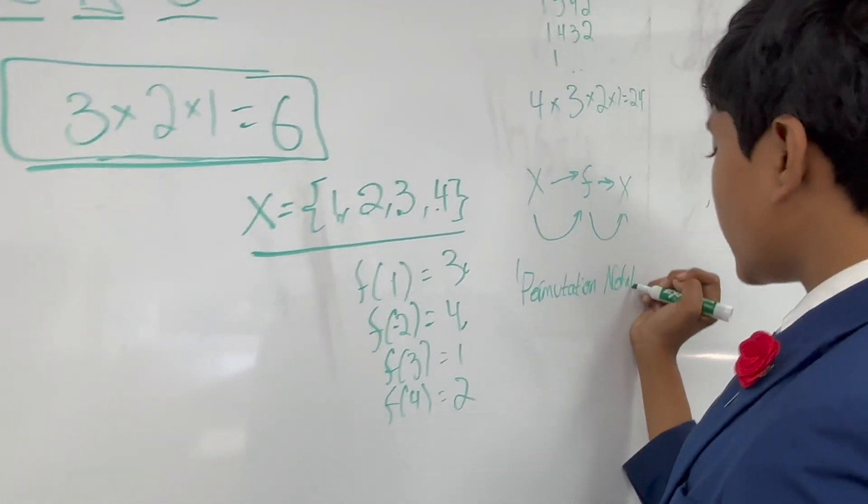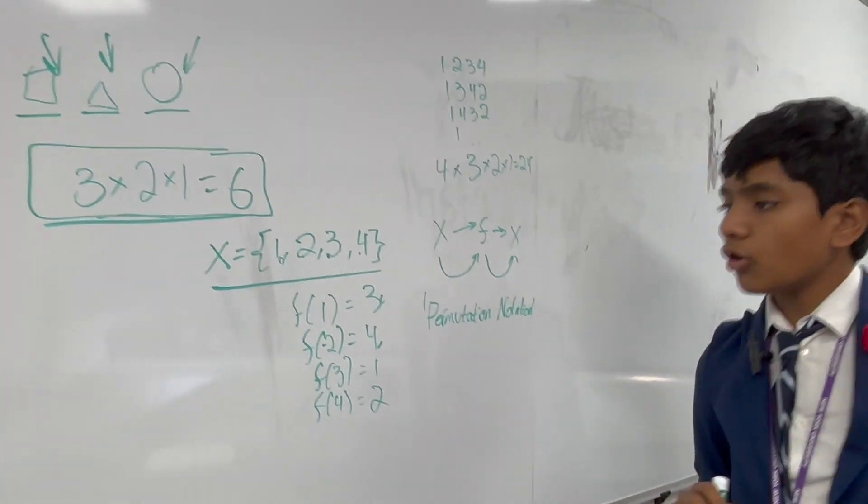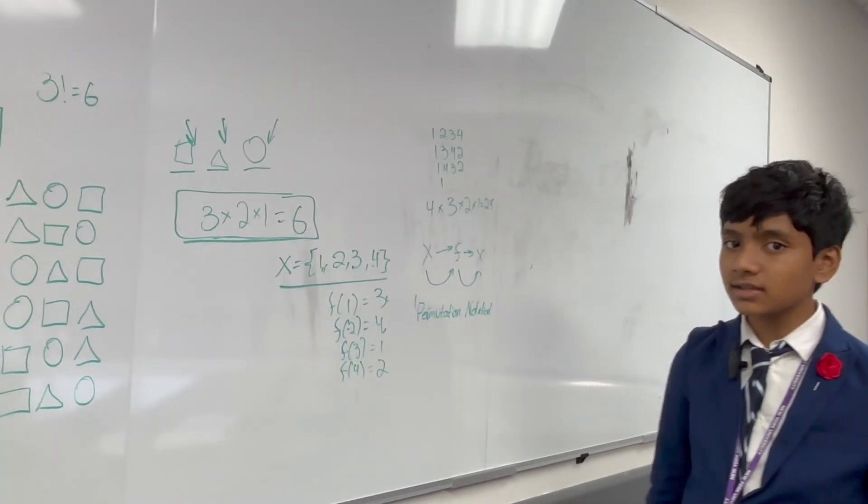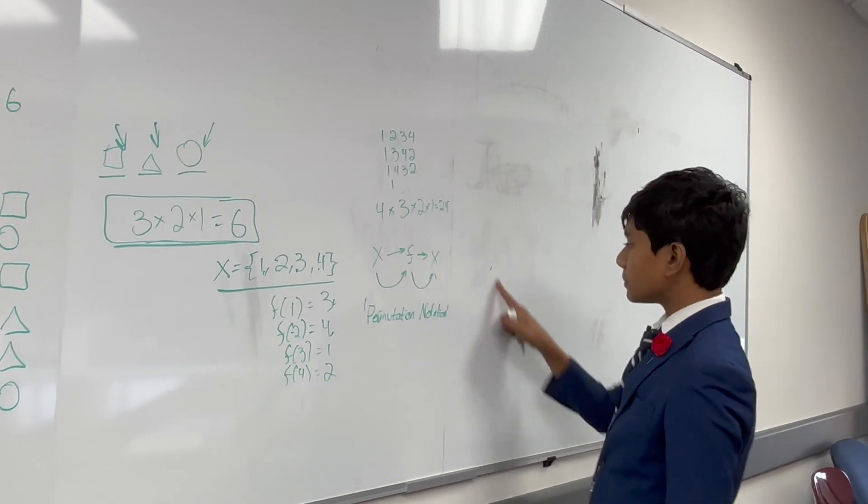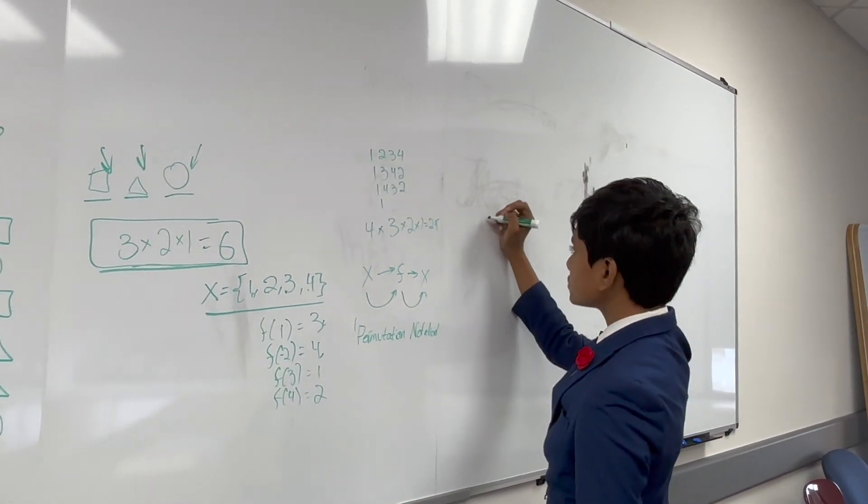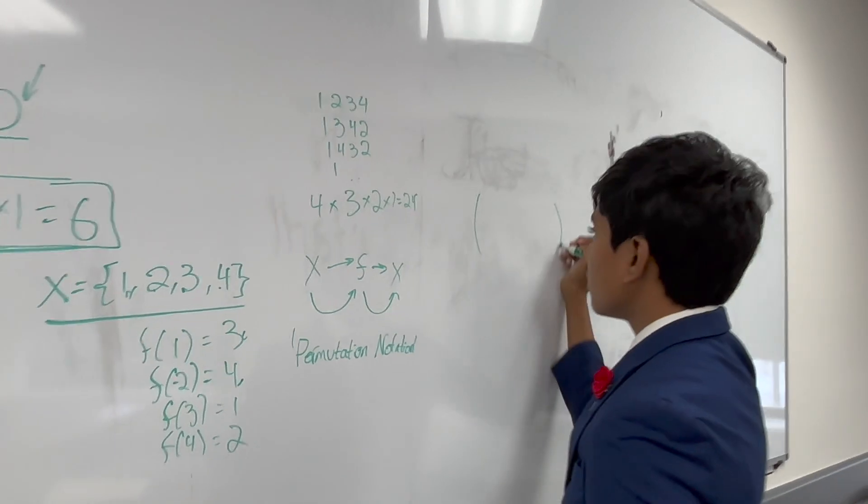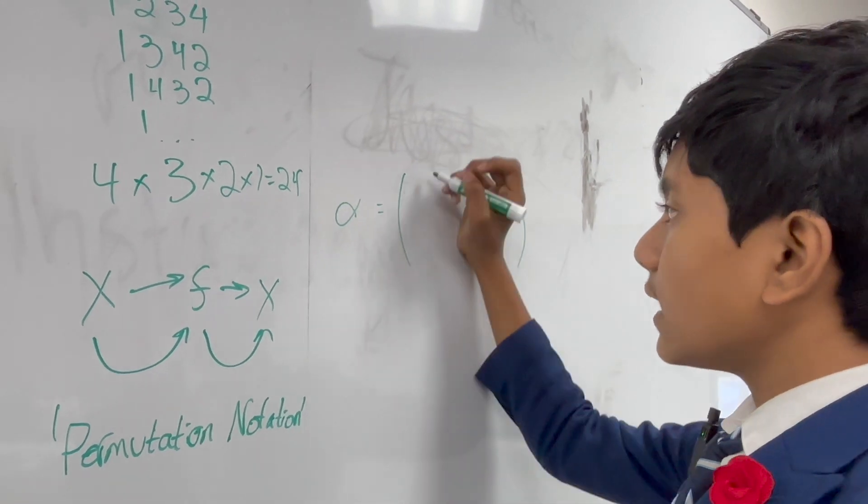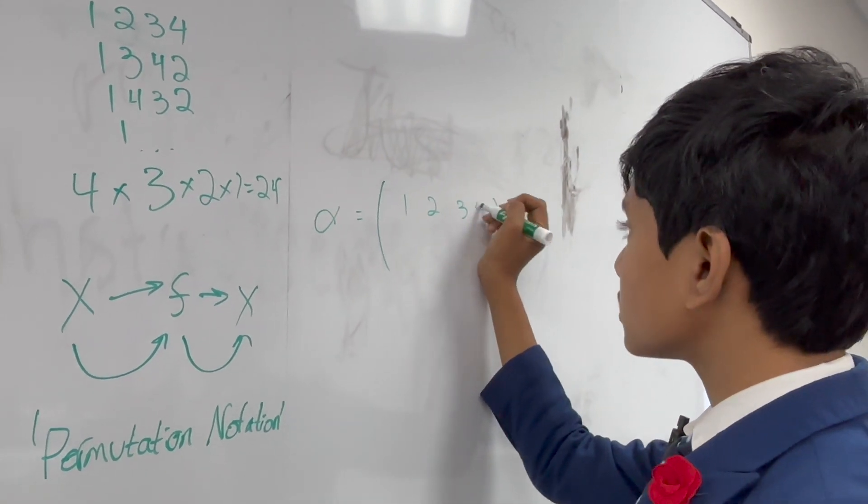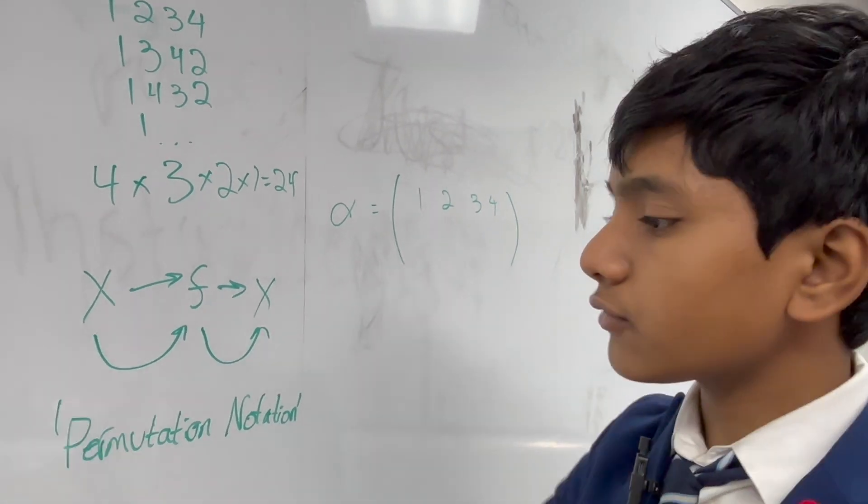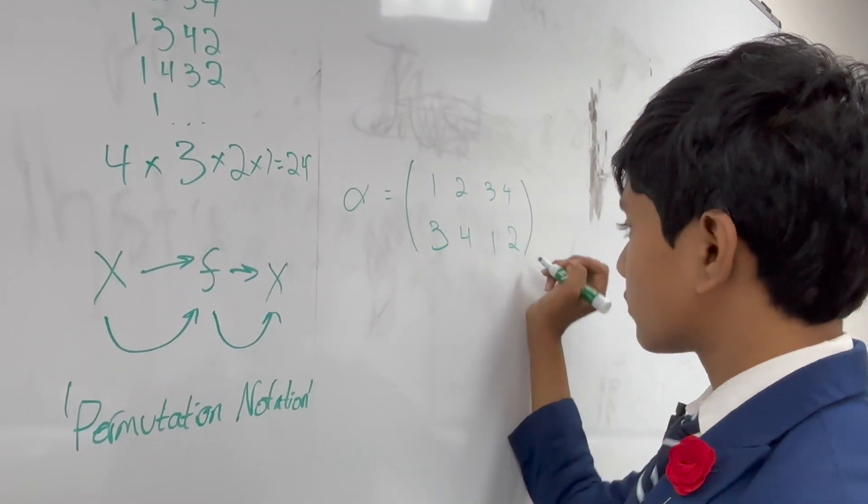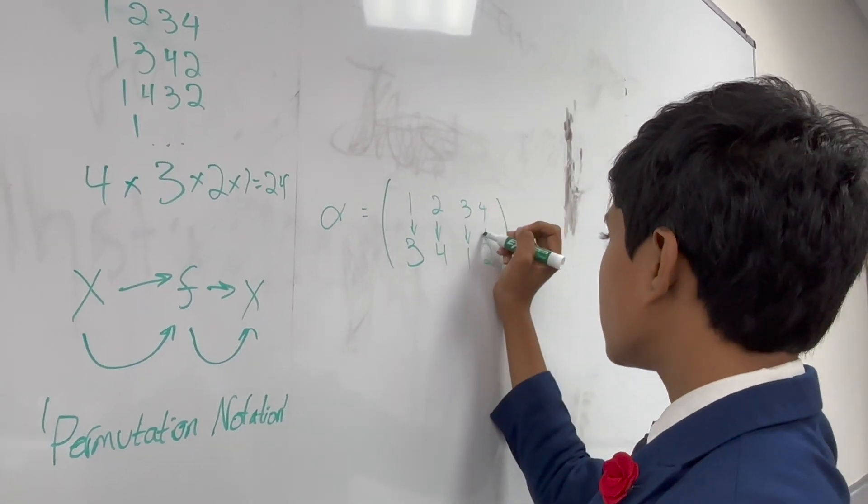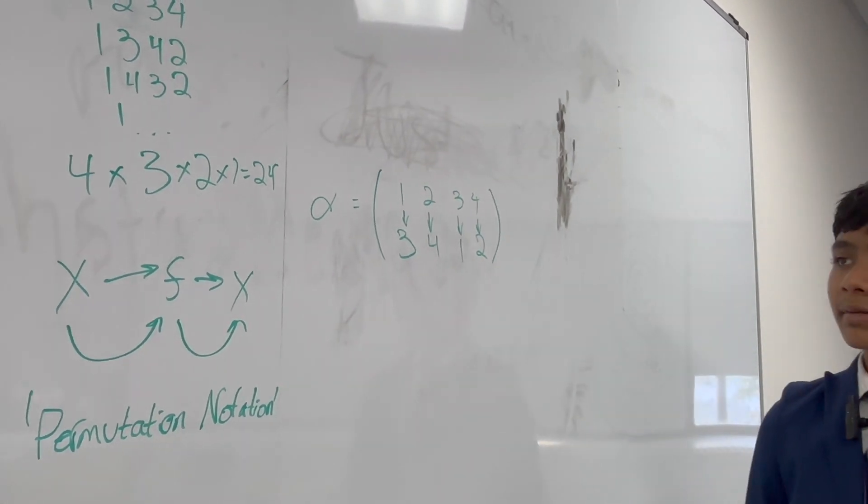How do we notate these functions that go from the regular set to a certain permutation of its elements? Well, one of the most popular ways is to draw something that kind of looks like a matrix, where you've got the elements of the set on top. So, you call this the permutation alpha. And we've got the set elements on the top and then what they map to on the bottom. Like, for example, our function would be 3, 4, 1, 2. 1 goes to 3, 2 goes to 4, 3 goes to 1, and 4 goes to 2. Pretty simple, right?